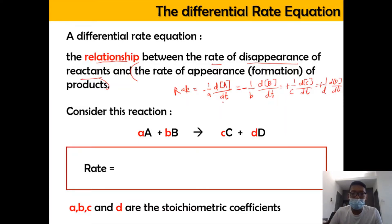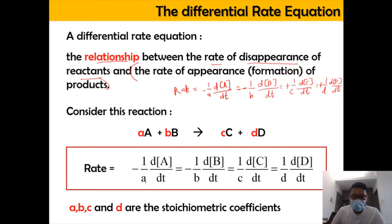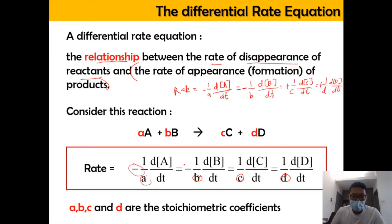The rate of disappearance of A equals the rate of disappearance of B, which equals the rate of formation of C and the rate of formation of D, where A, B, C, and D represent the stoichiometry coefficients — you just divide by them. Don't forget the negative sign represents a reactant and the positive sign represents a product.